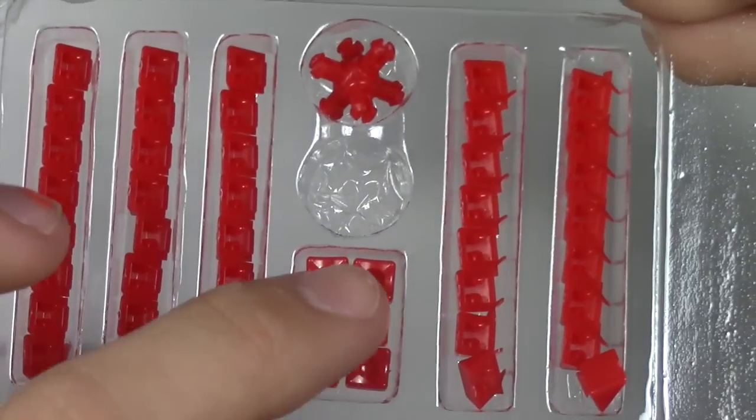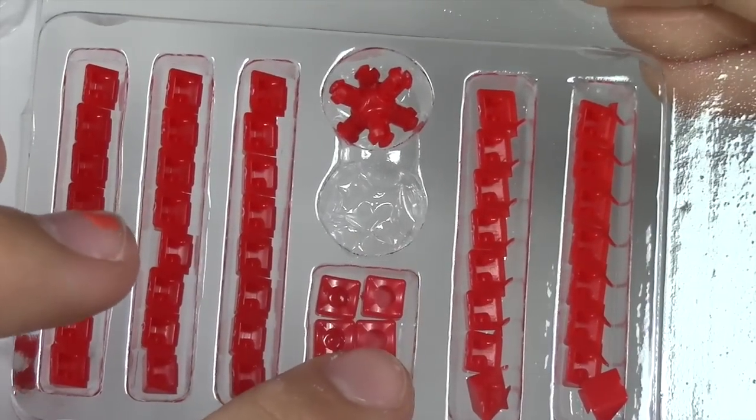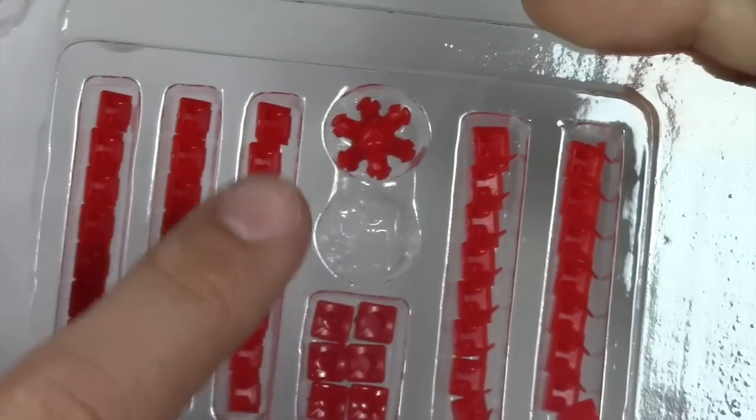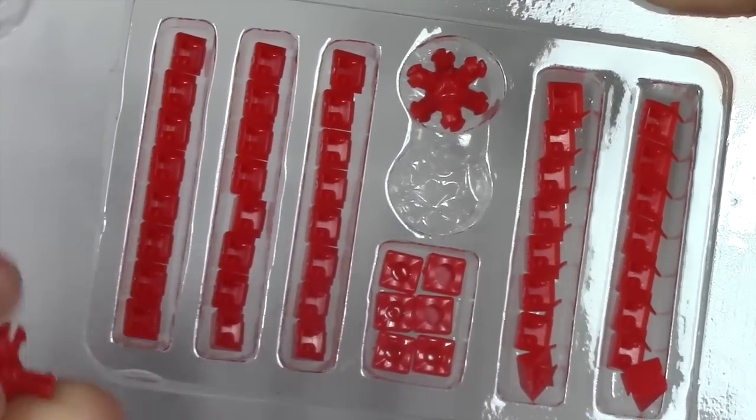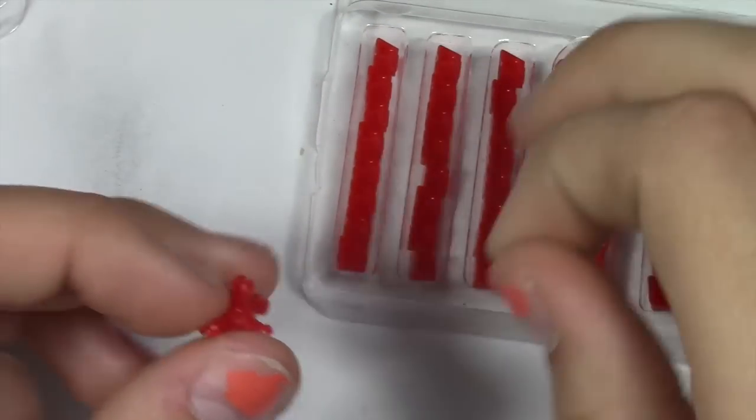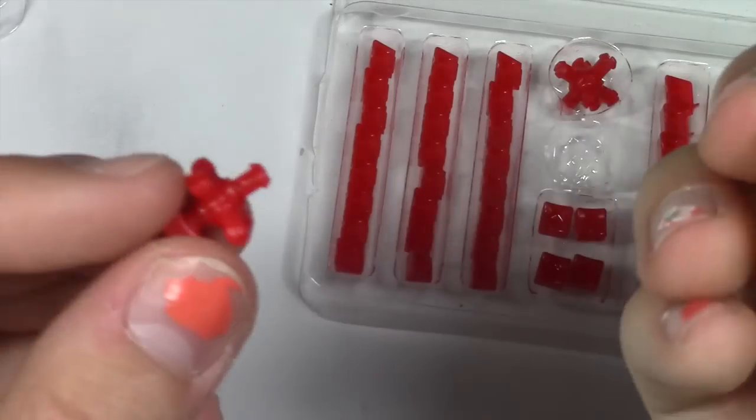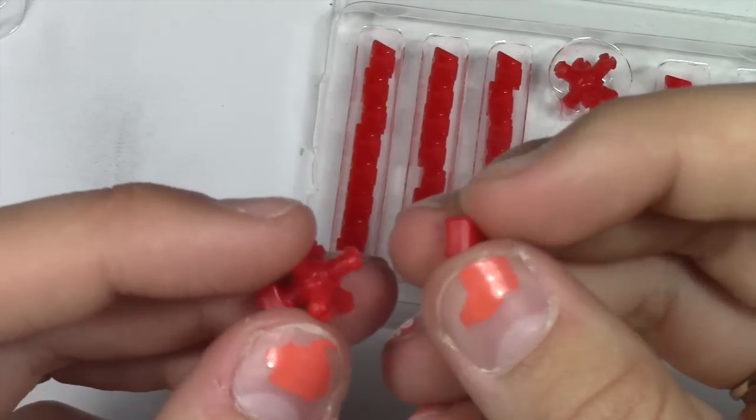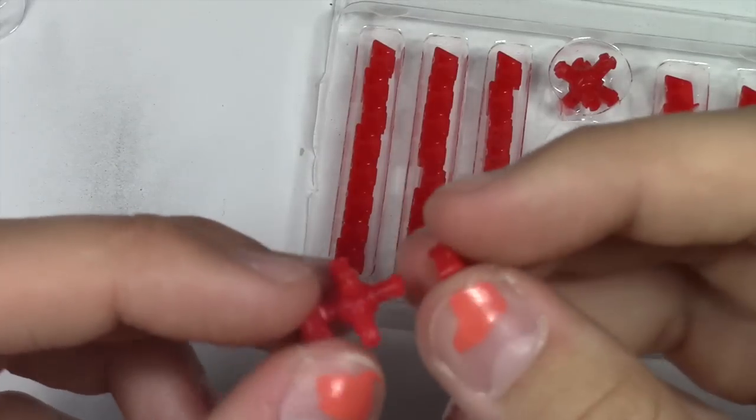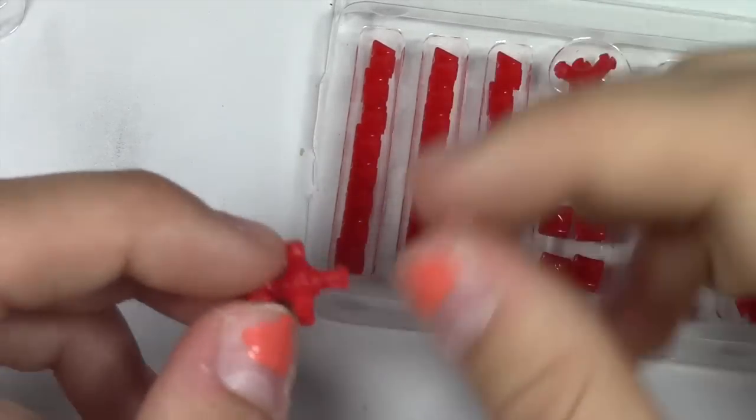And then we have these center pieces and judging by the fact that there's only six of them, I'm assuming this package can only make one cube. Because if it could make two, it would have 12 of those, which it doesn't. So, I'm actually going to quickly put these on here. Because I only have 17 minutes left in my memory card, I'm actually going to go off camera and finish assembling the center piece.